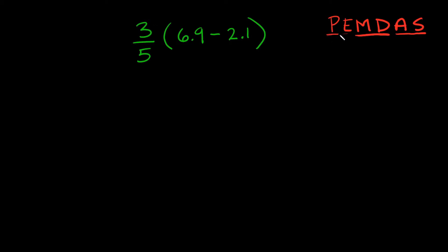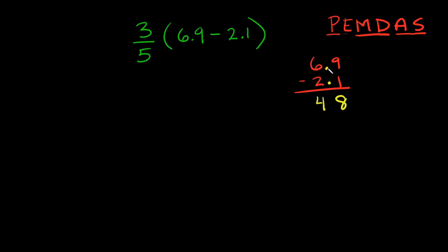With the order of operations, we always start with parentheses. So do we have parentheses in our problem? Yes, we do — right here. So that means we have to simplify what's inside of our parentheses first: 6.9 minus 2.1. When you're subtracting decimal numbers, make sure their decimal points are lined up. So 9 minus 1 is 8, and 6 minus 2 is 4, and you bring the decimal point straight down. So 6.9 minus 2.1 reduces down to 4.8.